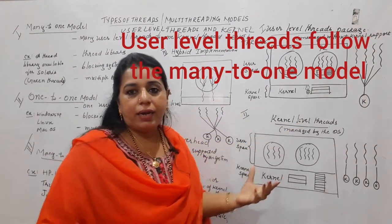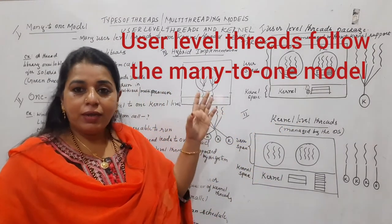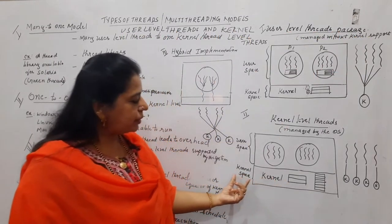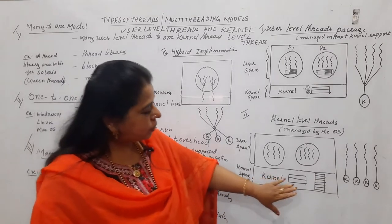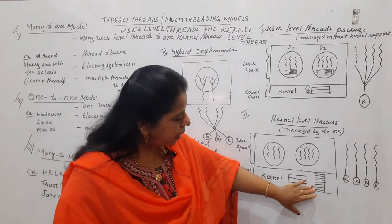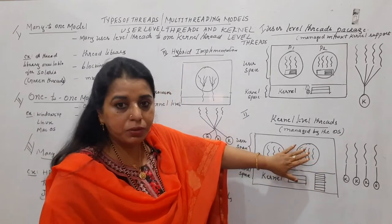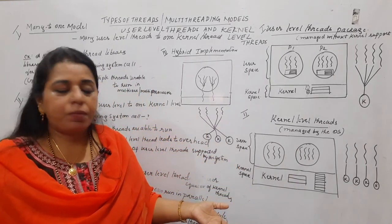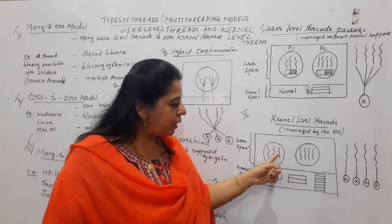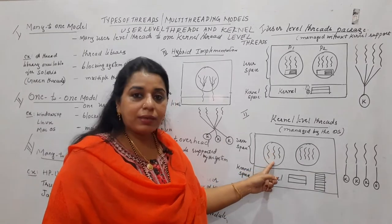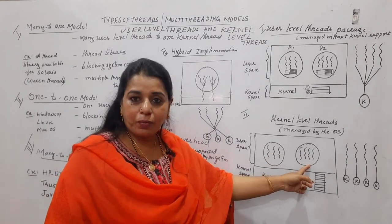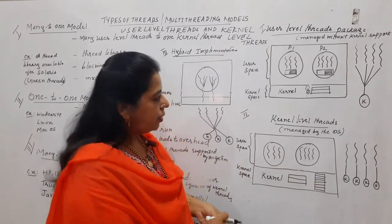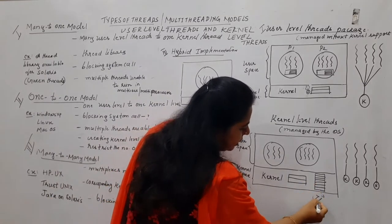Now moving to kernel-level threads. In the kernel space, the kernel maintains information about all threads in the user space as well as complete information about each process. In this example, there are two processes — one with three threads and one with four threads, totaling seven threads. This is maintained as a thread table.